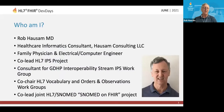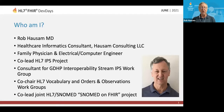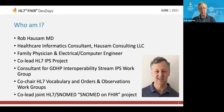First I'll say a little bit about who I am. I go by Rob — I'm Rob Hausen, MD. I'm a consultant with my own consulting company. My background is as a family physician and also an electrical and computer engineer — it's always a useful combination for this kind of work. I'm a co-lead on the HL7 IPS project and a consultant with the GDHP — the Global Digital Health Partnership — Interoperability Stream and its IPS work group. I'm also a co-chair in the Vocabulary and Order and Observations groups, and I do a lot of work with SNOMED. I'm one of the co-leads on the SNOMED on FHIR project.